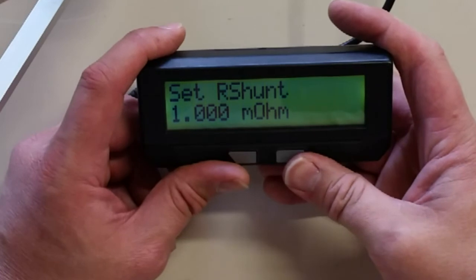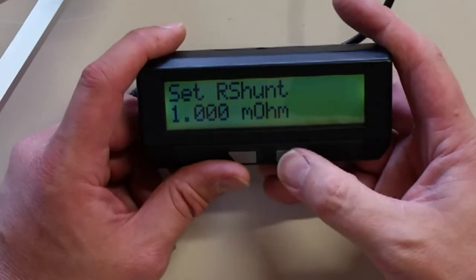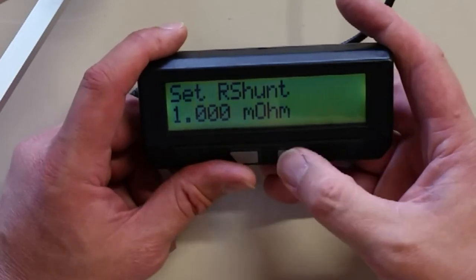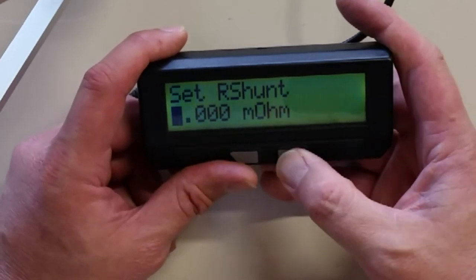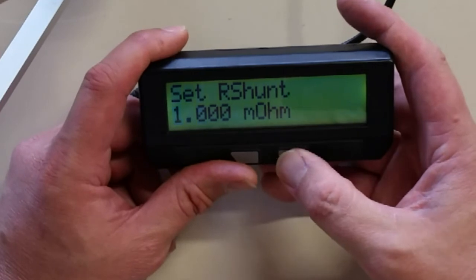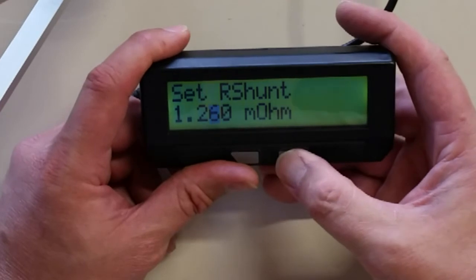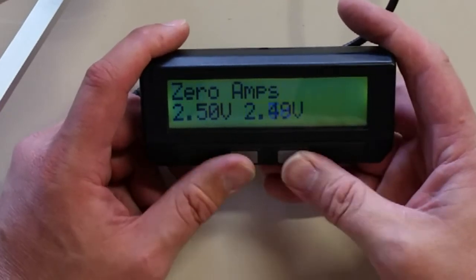And then we're going to set the R shunt. So if you remember, our shunt on our controller was 1.26 milliohms. So we'll go ahead and set that. So we'll enter the program. 1.2, 6, 0.